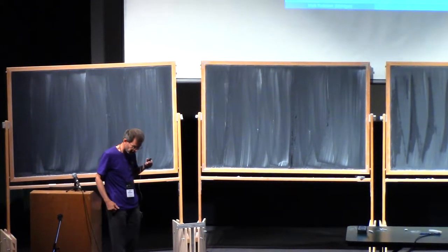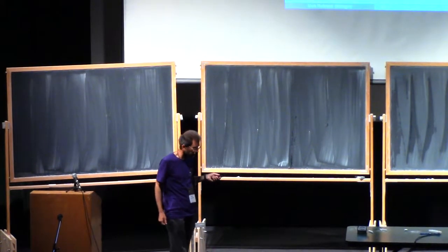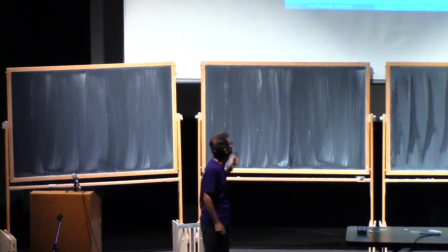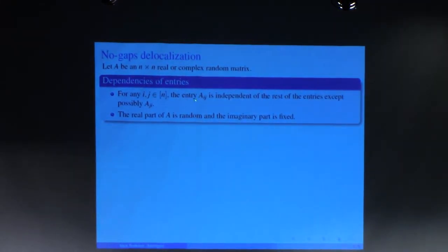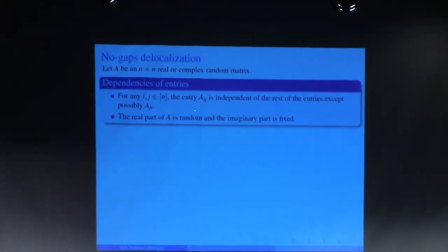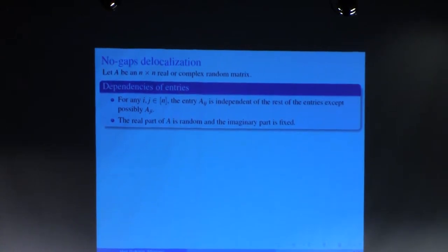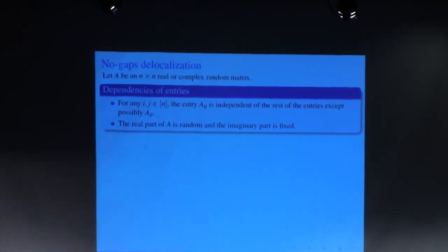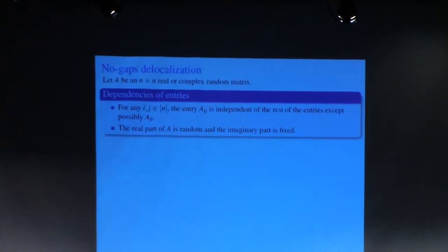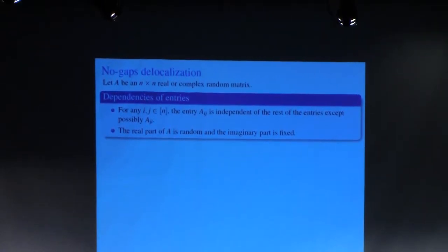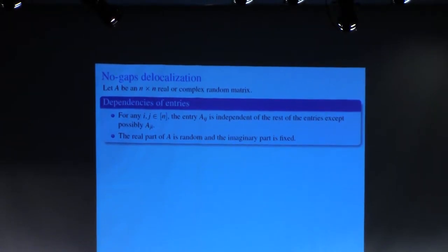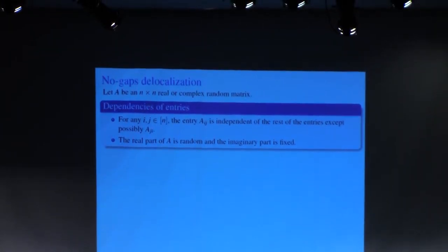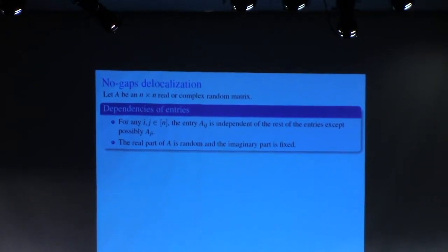We are going to prove this for a very general family of random matrices. We assume that the entries of a matrix are independent, with the only possible exception that the entry A_ij may depend on A_ji. This would include in our class fully independent ensembles like Ginibre, as well as Hermitians, Q-Hermitians, and other ensembles.